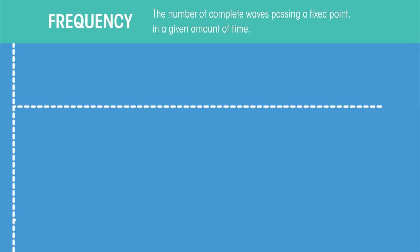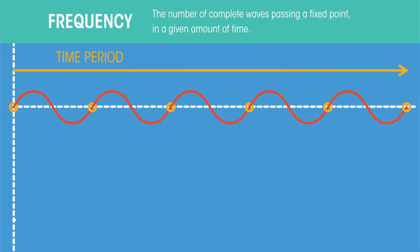The frequency of a wave is the number of complete waves passing a fixed point in a given amount of time. This time period is usually one second. This is what one complete wave looks like.